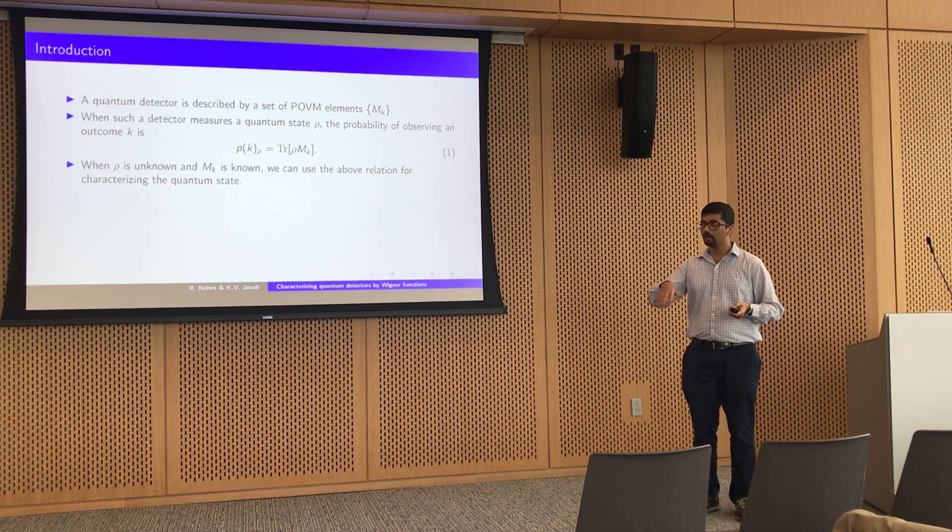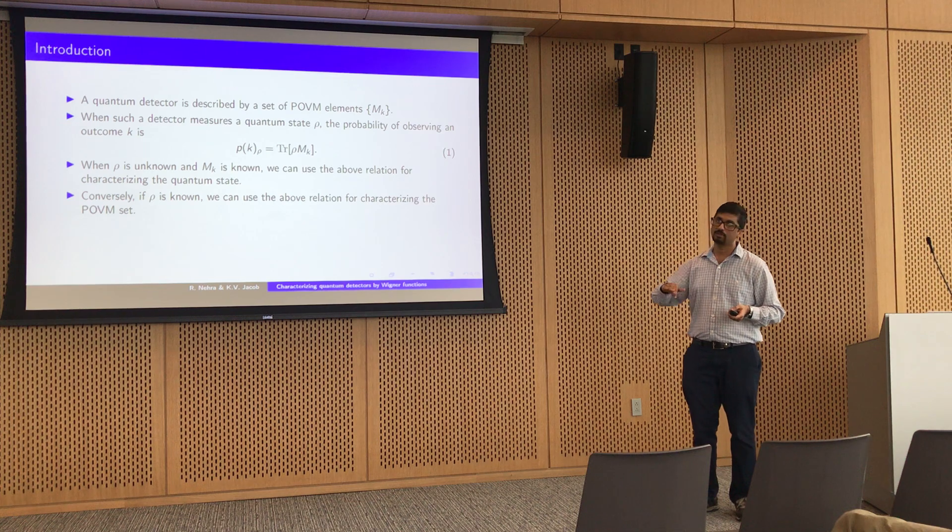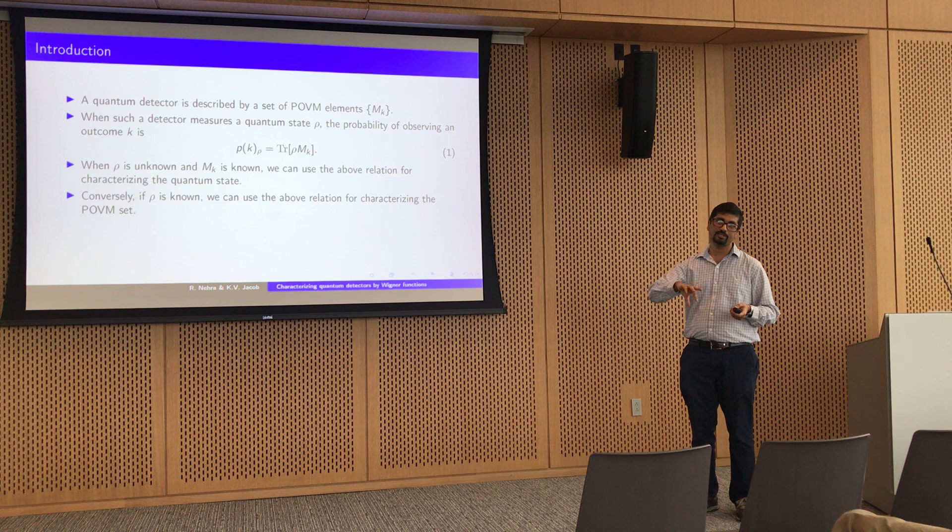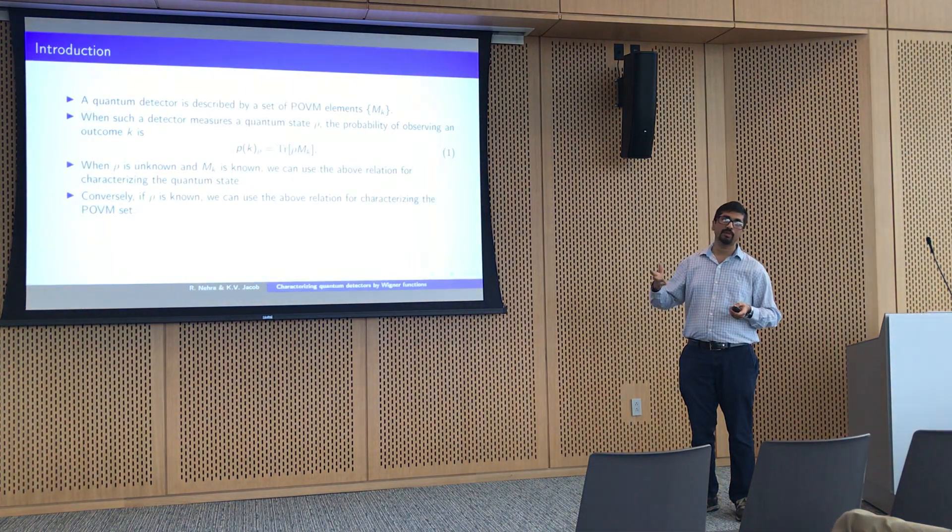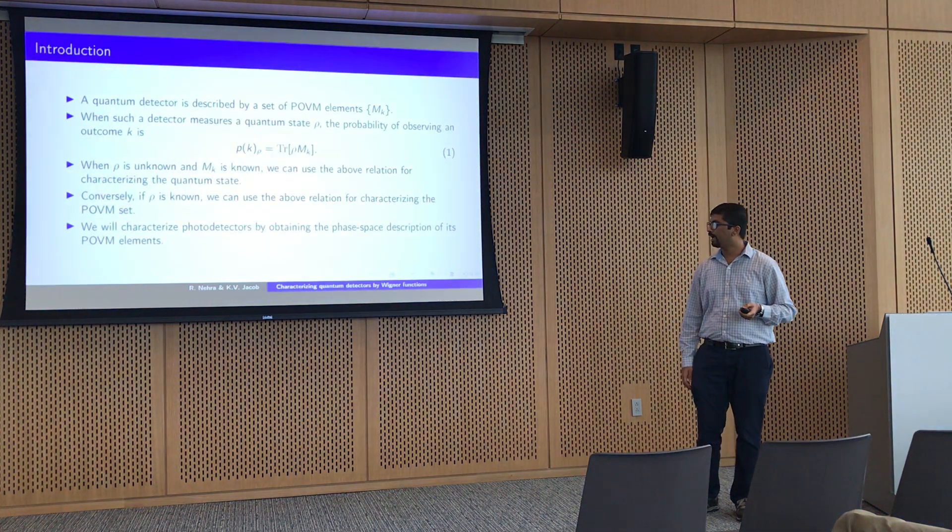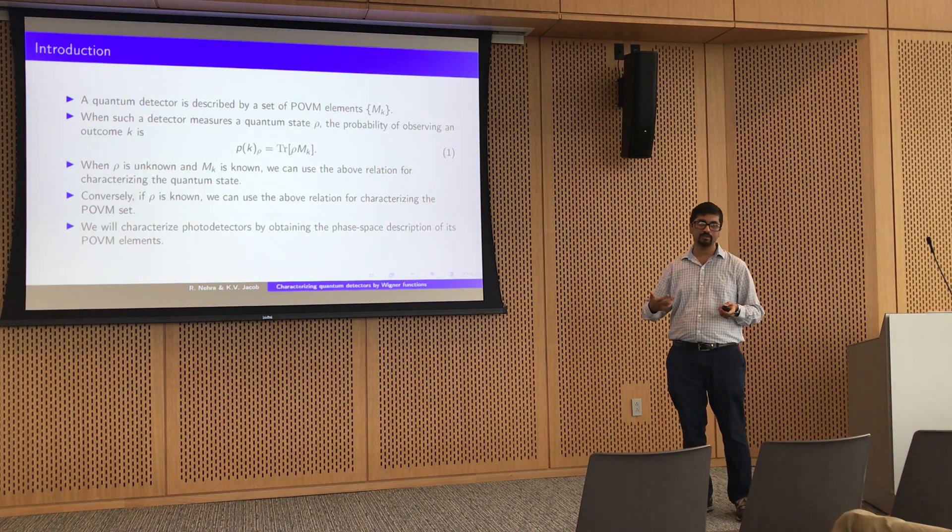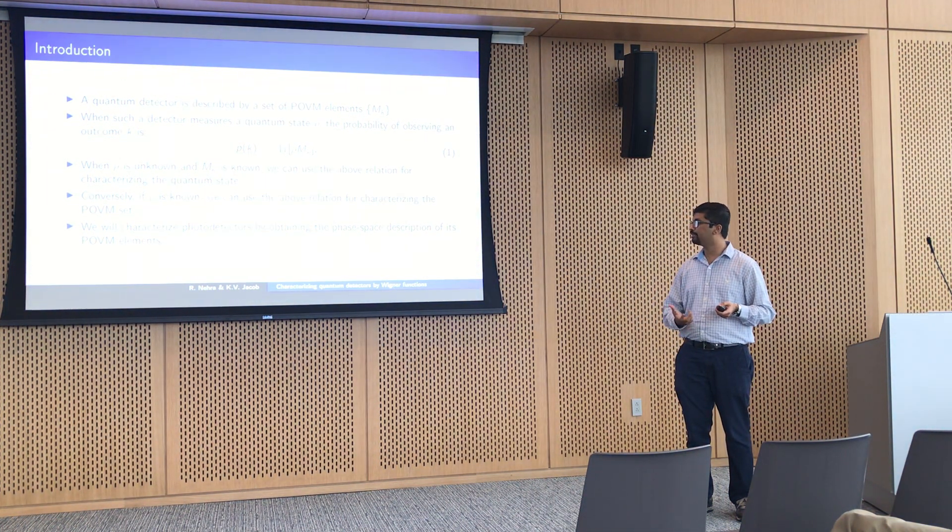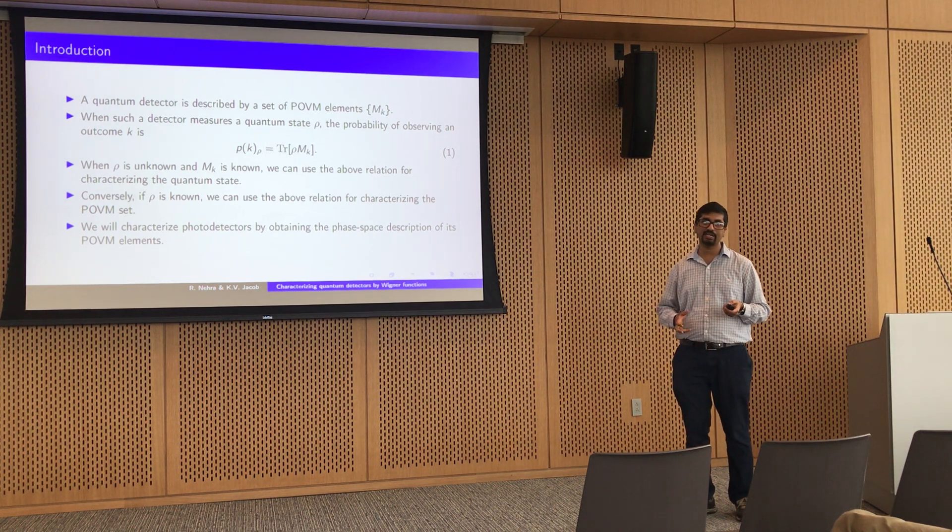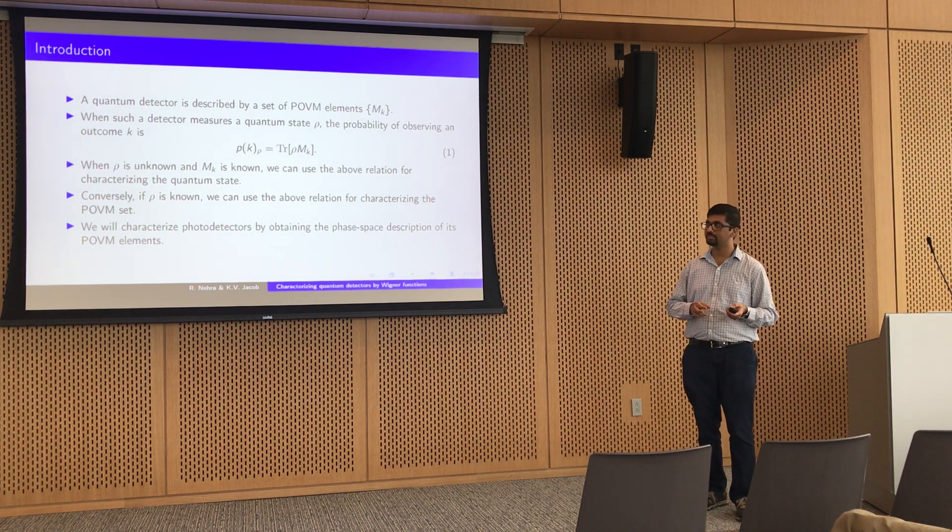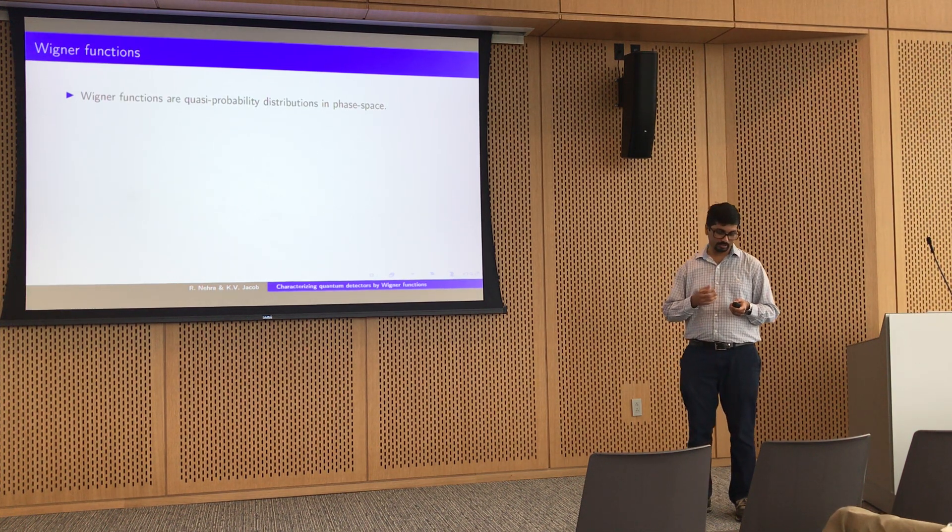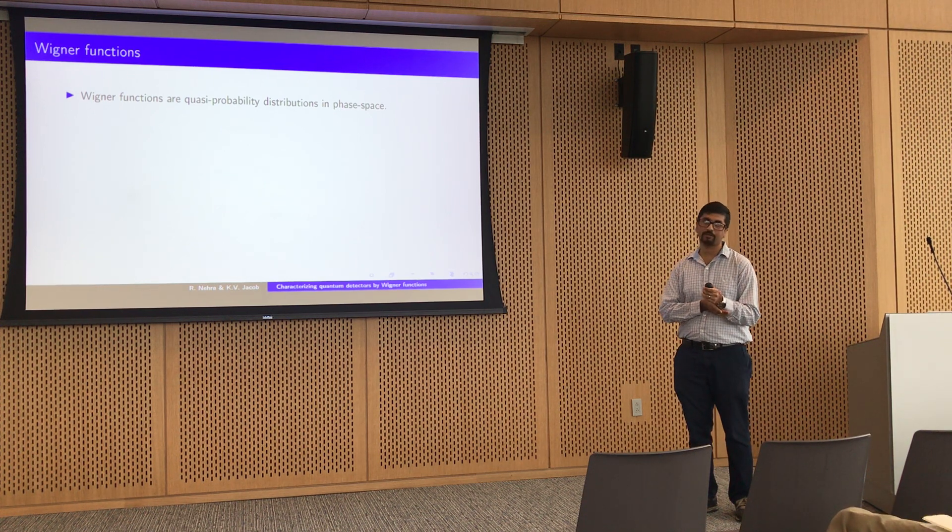From this basic formula, if the state is what is unknown and the measurement device is known, then we can use this relation to obtain probabilities and we can use it in turn to characterize the quantum state. And in contrast, conversely, if the state is what is known, we can use this above relation to find out the POVM set of a detector. In this talk, I will be interested in characterizing photodetectors by obtaining the phase space description of its POVM elements.